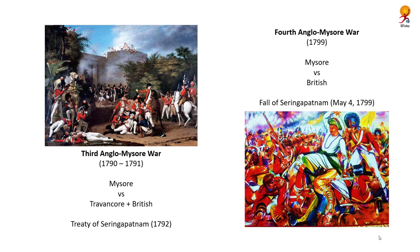The Third Anglo-Mysore War lasted from 1790 to 1791. In a conflict between Travancore and Mysore, the British sided with Travancore, leading to its outbreak. Tipu Sultan defeated the British army in the first 1790 battle; however, in 1791 at Seringapatam he lost. In 1792, the Treaty of Seringapatam was signed, leading to a breakdown of the Mysore empire into smaller portions.